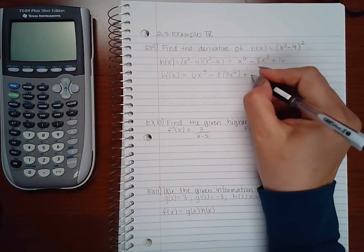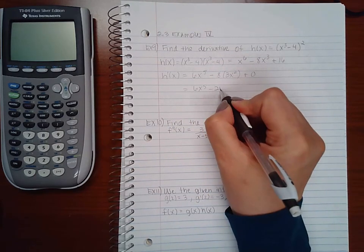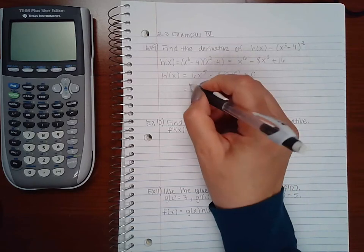Because the derivative of a constant is just 0, I get 6x to the 5th minus 24x squared all together.